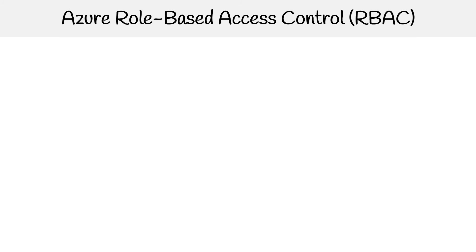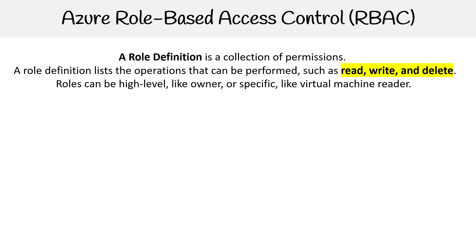The last element is a role definition, and this is a collection of permissions. A role definition lists operations that can be performed, such as read, write, and delete. Roles can be high level like owner, or specific like virtual machine reader.